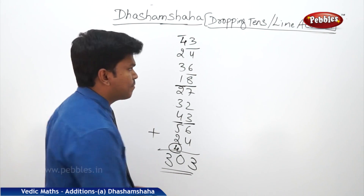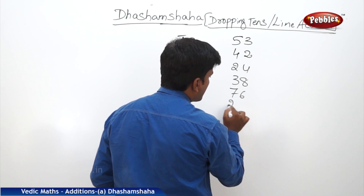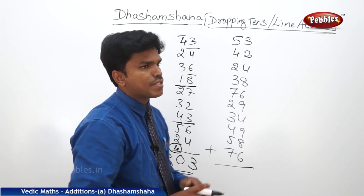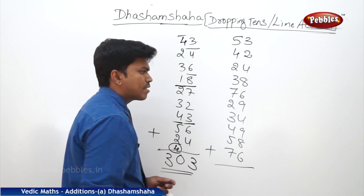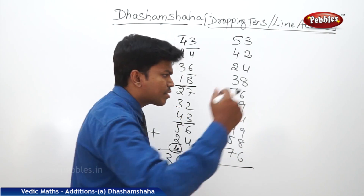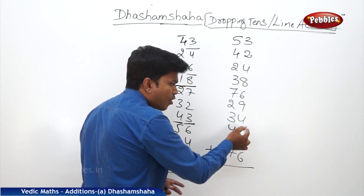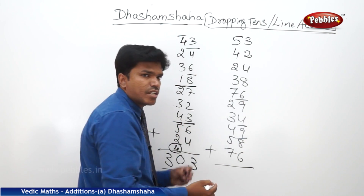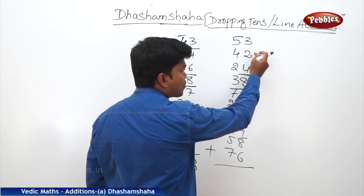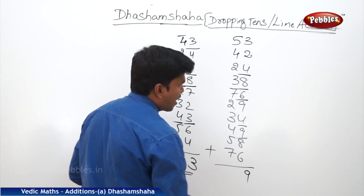Let us take one more example: 53, 42, 24, 38, 76, 29, 34, 49, 58, 76. We have to add these numbers. Start from the right side — this time I will go a little fast. Keep concentrated. 6 plus 8? 14 — carry 4. 4 plus 9? 13 — drop 10, carry 3. 3 plus 4? 7. Then 7, 9, 16 — carry 6. Then 6, 6, 12 — drop 10, carry 2. 2 plus 8? 10 — remaining 0. Start freshly. 4 plus 2? 6. 6 plus 3? 9. Lastly remaining is 9. Count tens: 2 plus 3? 5. Carry that 5 to the next line.